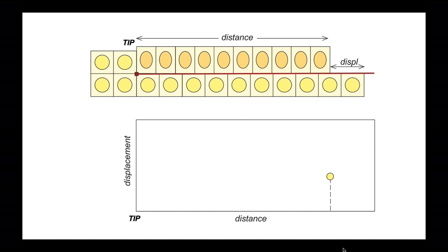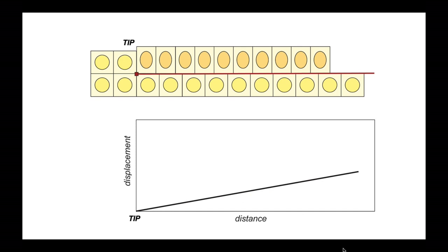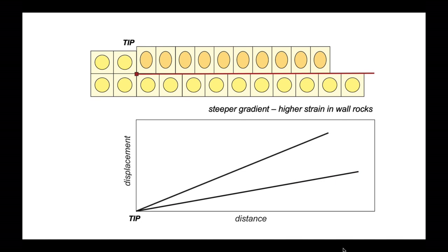Consequently, it plots in this position on the graph. We can do the same for the intermediate markers and link them all up into a relationship. Here's our linear relationship between distance and displacement along this fault. Comparing the gradient of this line with the model generated earlier, the earlier gradient is steeper — because the strain in the wall rocks in that first model was higher.